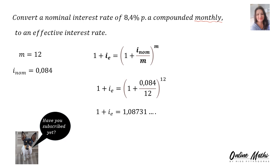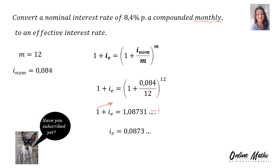The 1 walks across and we subtract it: I-effective equals 0.0873. As a rate, we multiply by 100. Therefore, our effective interest rate is 8.7% per annum.